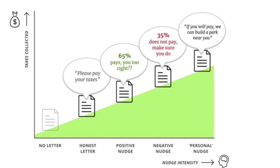For example, in a scenario trying to collect tax faster, a letter might use a positive nudge: '65% of people pay on time' — prompting you to ask why the majority pays but you don't. A negative nudge might say: '35% do not pay — make sure you do,' playing on your moral compass so you don't want to be in that group. A personal nudge could say: 'If you pay, we can build a park near you.' It all depends on how it's framed and what best influences that particular decision maker.